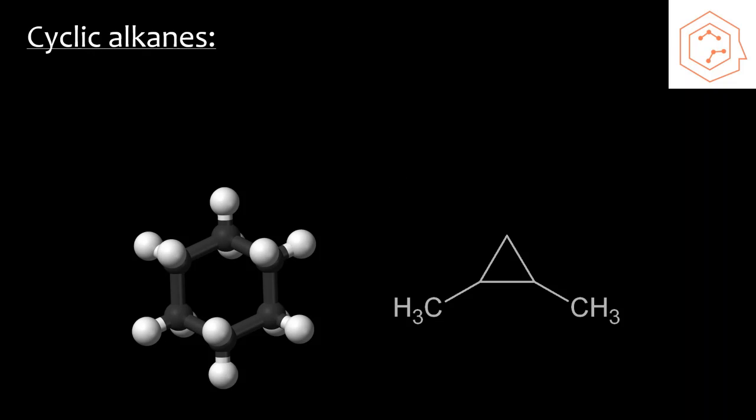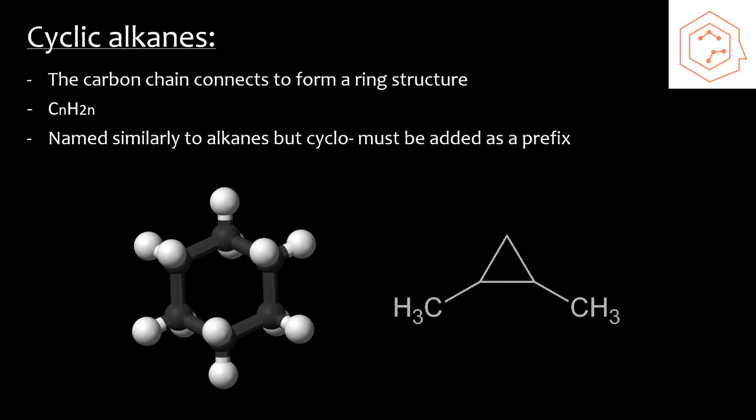Next up, we have cyclic alkanes. Cyclic alkanes still consist of the same carbon backbone that we saw in the chains before, except now the carbon chains have connected to form a ring structure, so there's no more ends. The general formula for a cycloalkane is CnH2n, and notice that each carbon can only form bonds with two other atoms. In terms of naming, they're named similarly to alkanes, where they use the same prefixes, but to indicate that it's a cyclic structure, we have to add cyclo before the prefix for the parent chain.